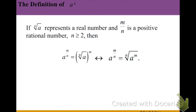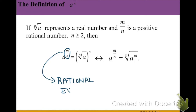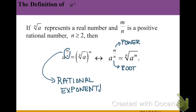Now, beyond integer roots, we can also have what we call rational exponents. A rational number is any number that can be written as a ratio or fraction. If the nth root represents a real number and m/n is a positive rational number with n greater than 2, we can break this down into a rational exponent. So a to the m/n power is the same as taking the nth root of a, raised to the m power — the numerator is the exponent or power applied to the base, and the denominator n is the root applied to the base.